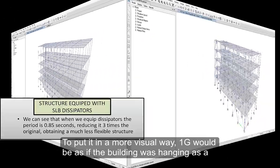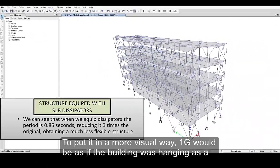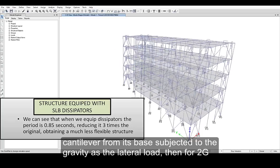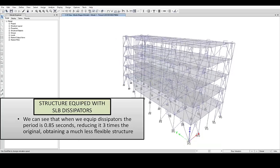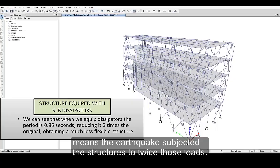To put it in a more visual way, 1G would be as if the building was hanging as a cantilever from its base subjected to the gravity as the lateral load. Then for 2G means the earthquake subjected the structures to twice those loads.